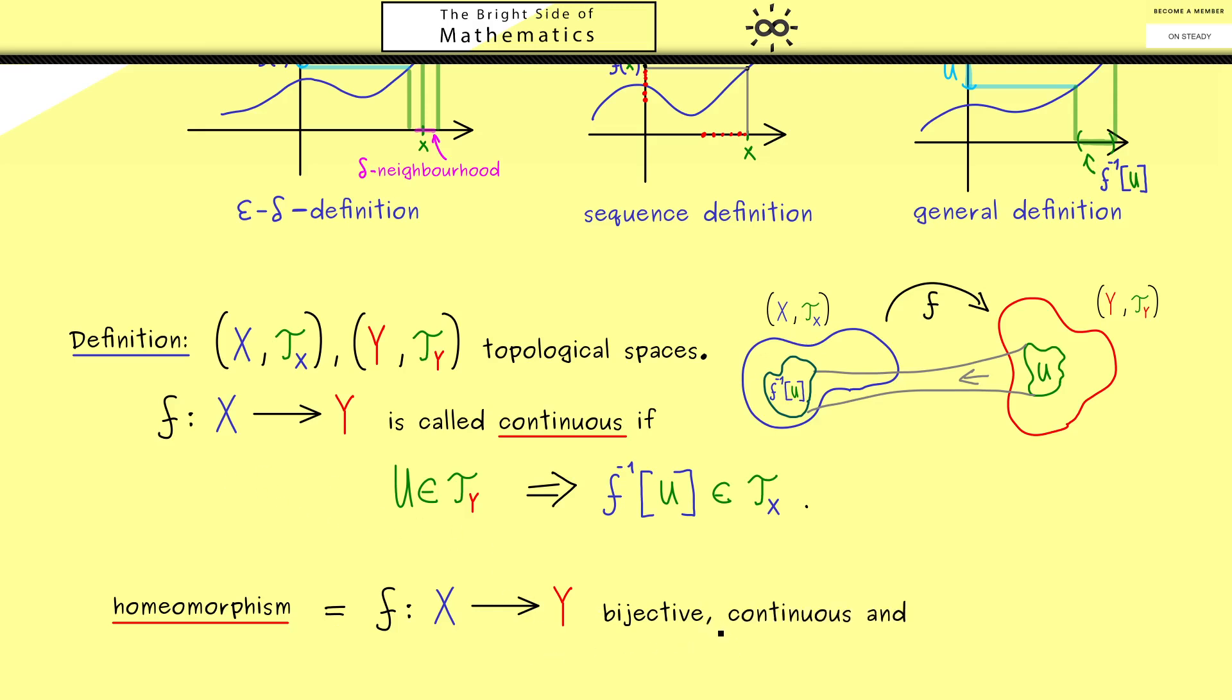More concretely, this means first the map f should be a bijective map, and second also a continuous map by this definition. And most importantly, we also have the third property that the inverse is also a continuous map. Of course, don't forget f inverse goes from Y into X.